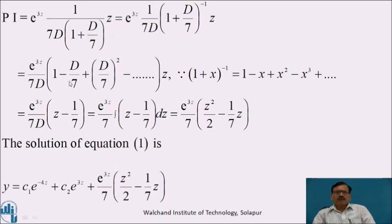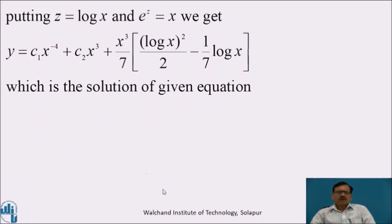Operating the bracket on z: 1·z - (1/7)·d/dz(z) = z - 1/7. Integrating: PI = (e^(3z)/7) · (z²/2 - z/7). Thus the solution of equation 1 is y = c₁e^(-4z) + c₂e^(3z) + (e^(3z)/7)(z²/2 - z/7). Putting z = log x and e^z = x, we get y = c₁x^(-4) + c₂x³ + (x³/7)(log²x/2 - log x/7), which is the solution of the given equation.